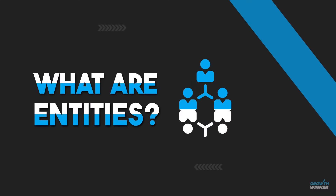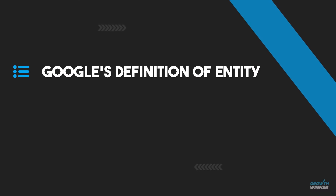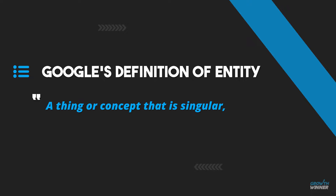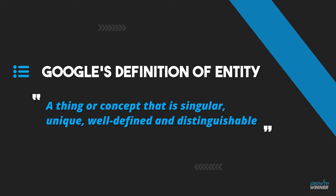So, what are entities? Google defines an entity as a thing or concept that is singular, unique, well-defined, and distinguishable. An entity can be an event, idea, book, person, company, place, brand, and a domain.